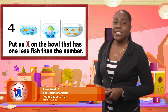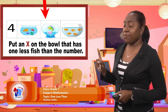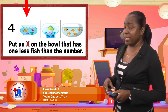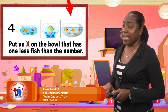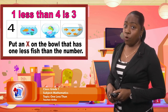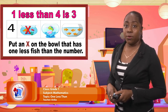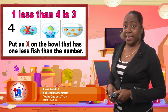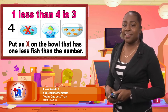Awesome. So let's look at it carefully once again. We have the number four. We have three fish bowls. The first one has three fishes. The middle one, one fish. And at the end, we have five fishes. One less than four would be three, which would be the first fish bowl with three fishes. One less than four is three. Awesome. You're getting good at this. Let's see what else we have here for you.